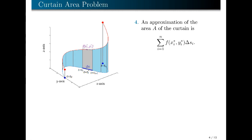We now go to the third part: sum. Our goal is to approximate the area of the entire curtain. What we have so far are the areas of the different rectangles. Each rectangle has area f(xᵢ*, yᵢ*) · Δsᵢ. Therefore, an approximation of the area A of the curtain is the summation of all rectangle areas, from i = 1 up to n. Note that this summation is still an approximation. Indeed, this portion of the curtain is neither a rectangle nor a planar region — in general, it is a curved surface in three-dimensional space.